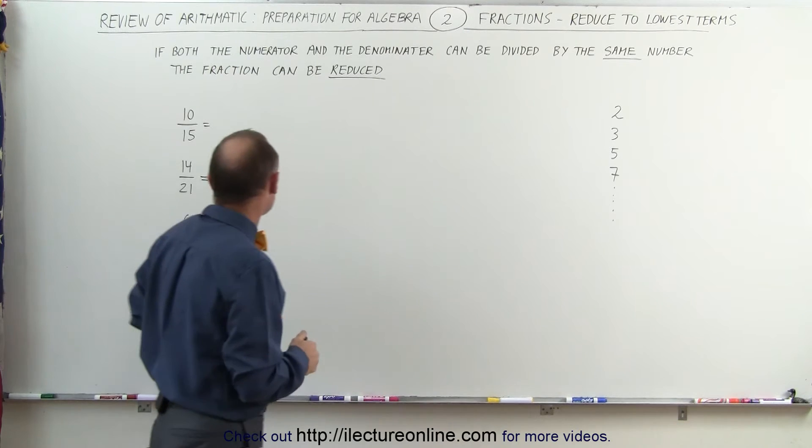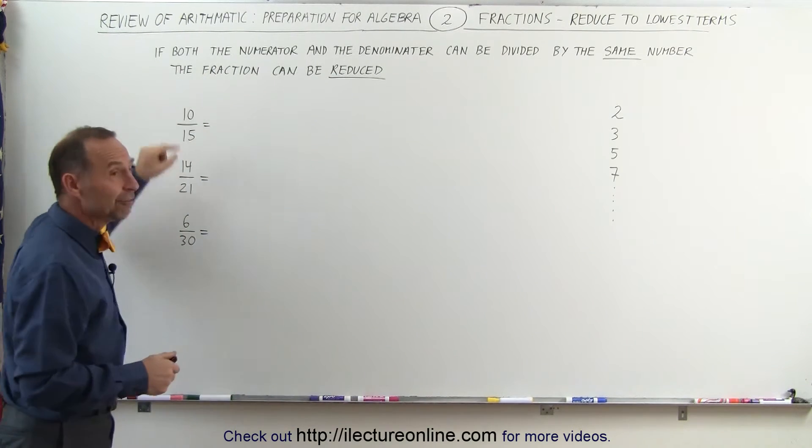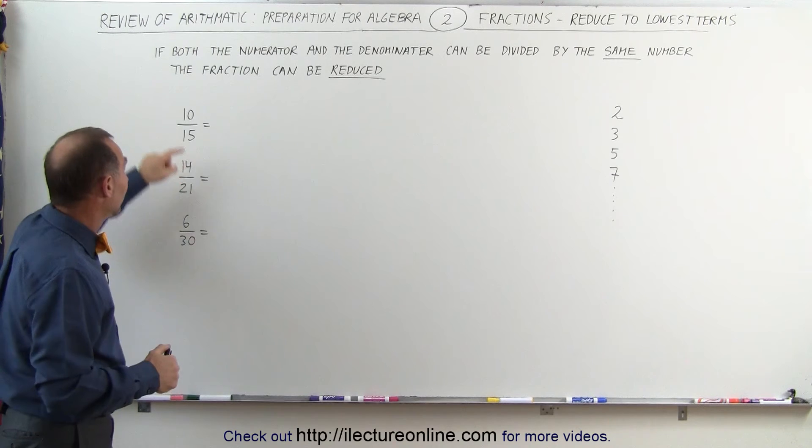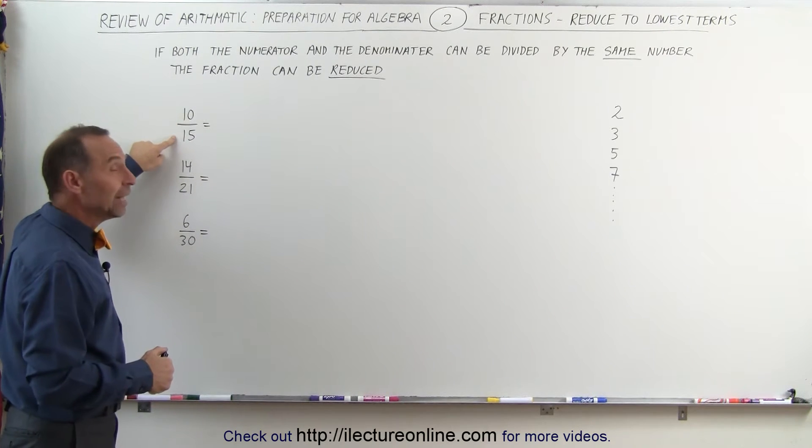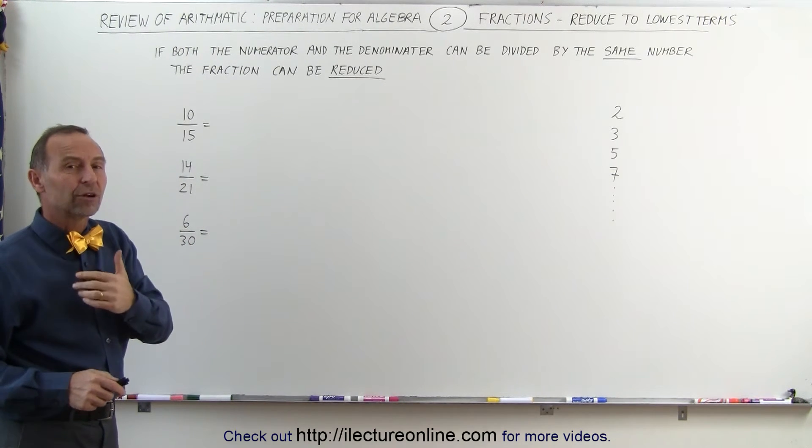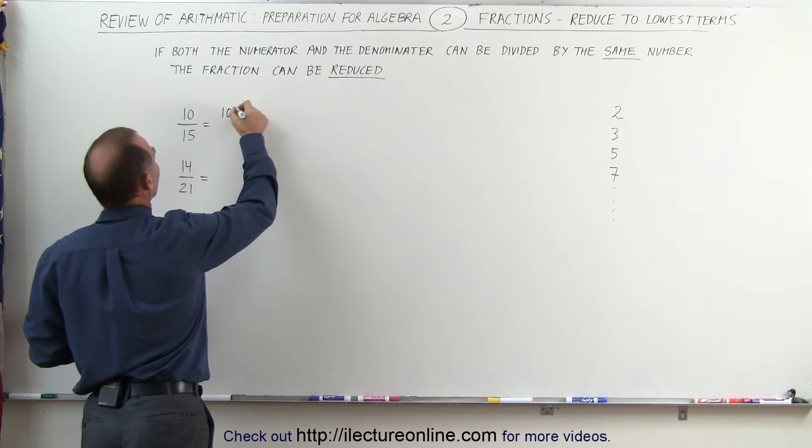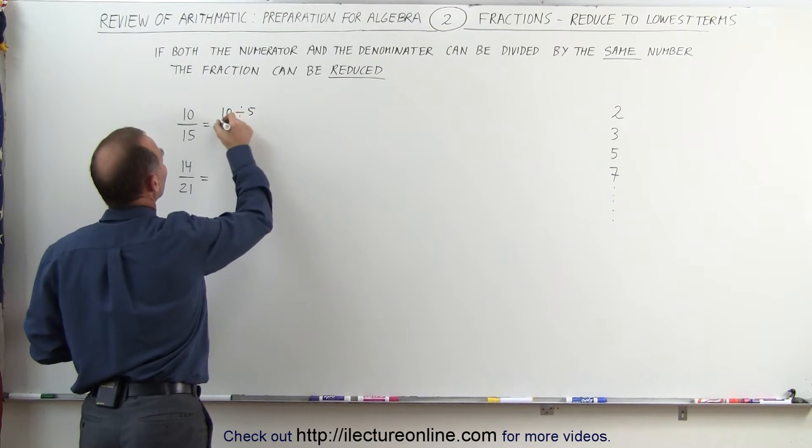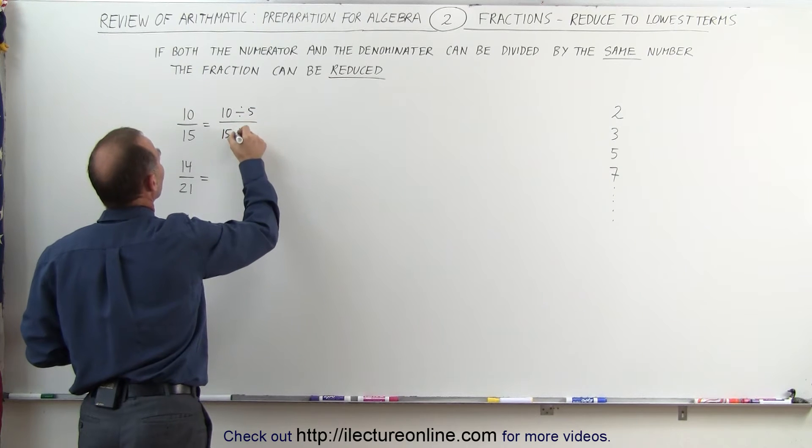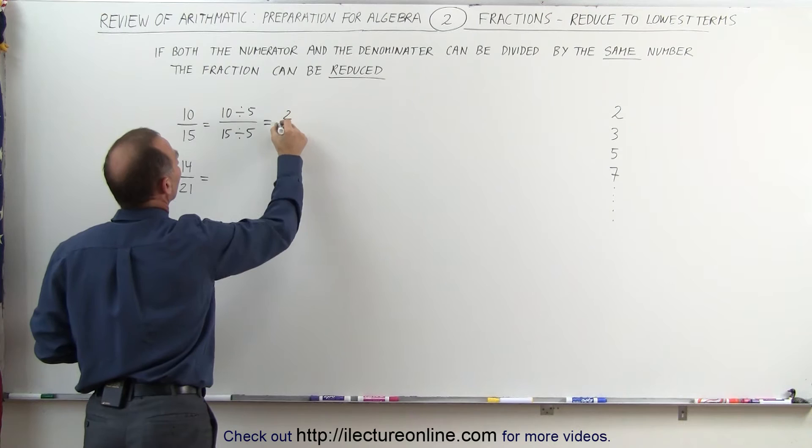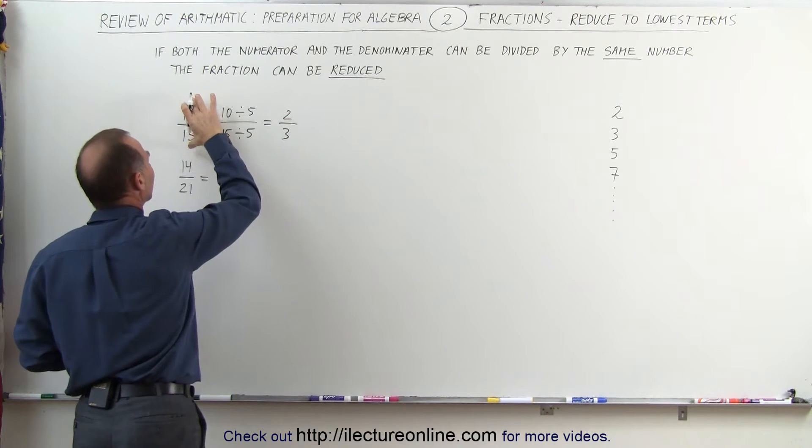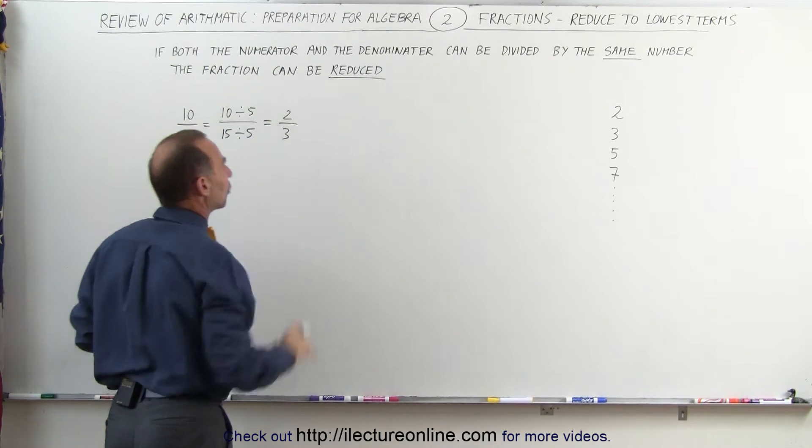For example, a number is divisible by 5 if it ends in a 0 or a 5. 10 ends in a 0, 15 ends in a 5, both those numbers are divisible by 5, so we can write this as 10 divided by 5 divided by 15 divided by 5. And 10 divided by 5 is 2, 15 divided by 5 is 3, so the fraction 10 fifteenths can be reduced to two-thirds.